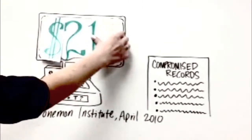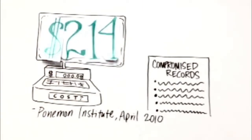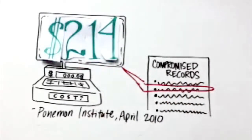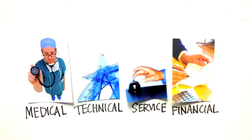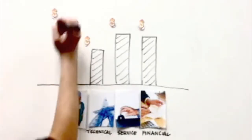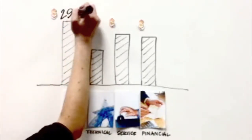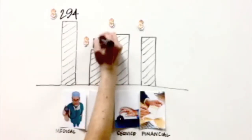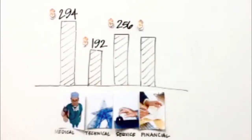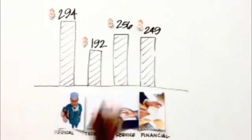Ponemon Institute released a study that indicated the average cost of a data breach was $214 per compromised record. The same study investigated the average cost of a data breach across different industries. A compromised medical record averages $294, while a technical record $192, services $256, and financial $249.